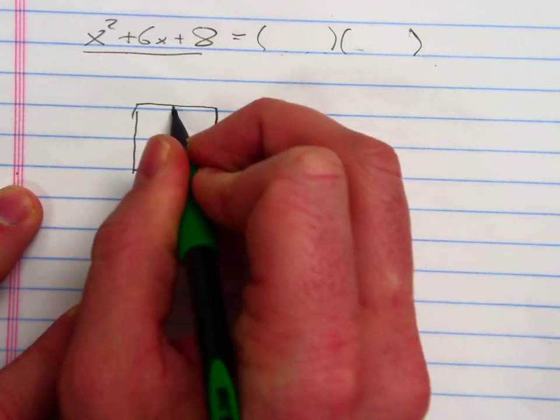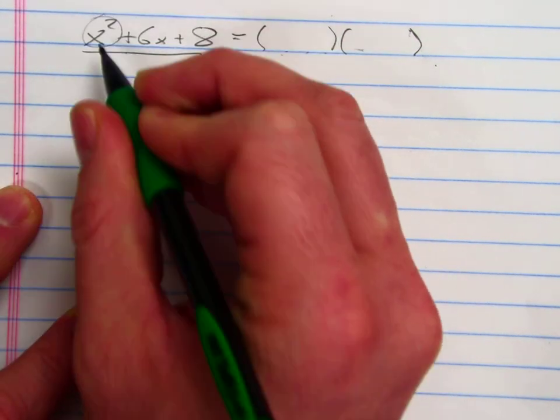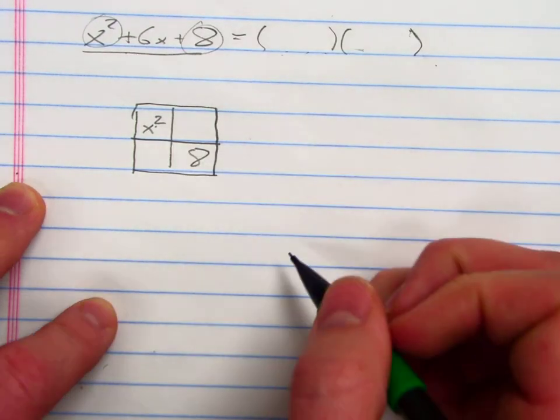I want to take my first term and put it here, because our x squared terms always go there, and then my constants always go in the last box. And basically I'm going to write some form of this number in these two boxes.